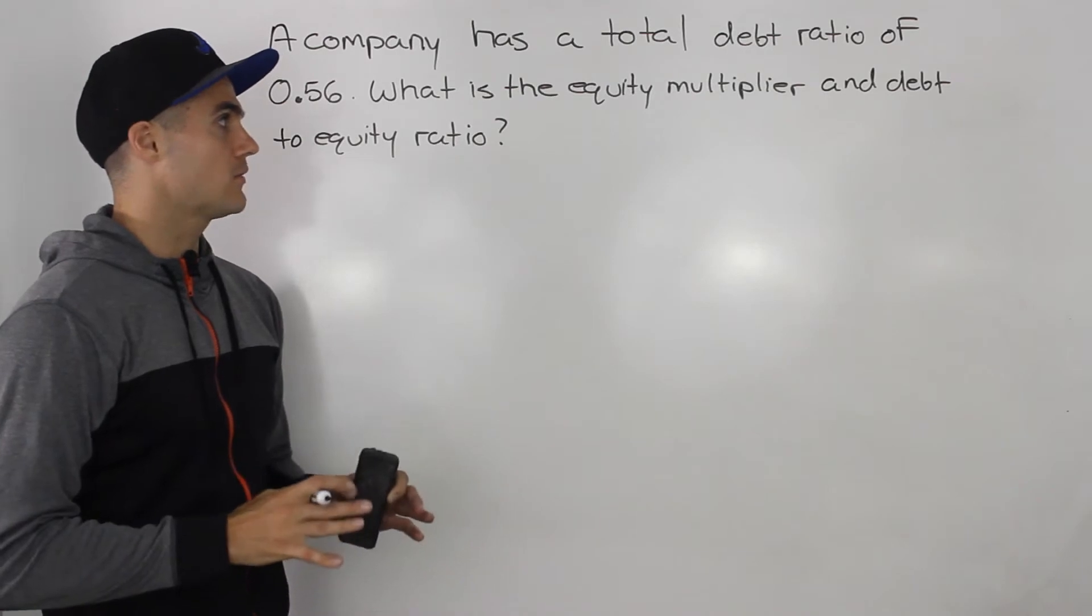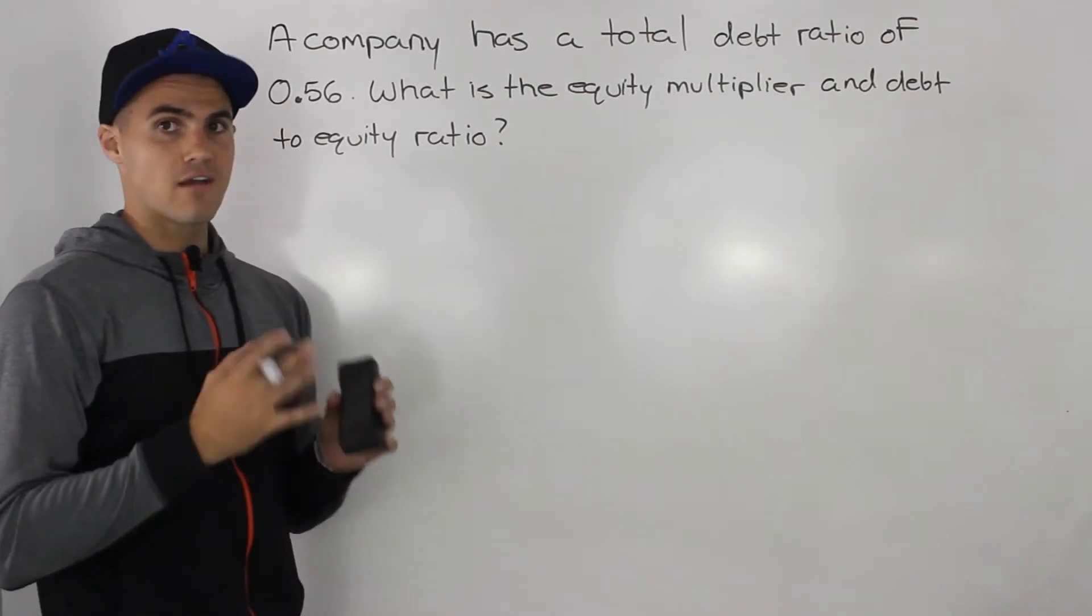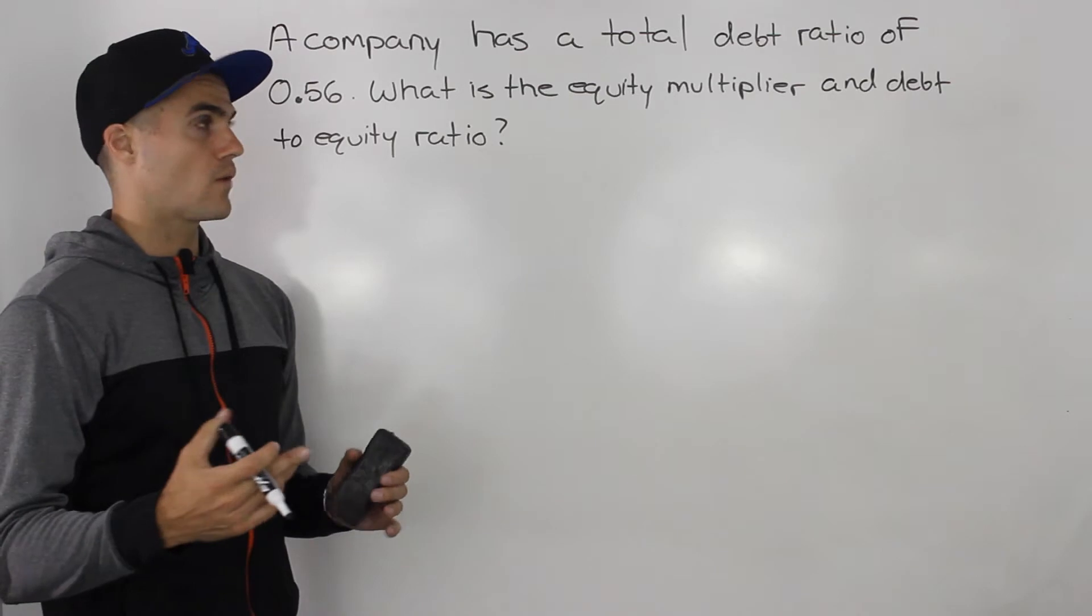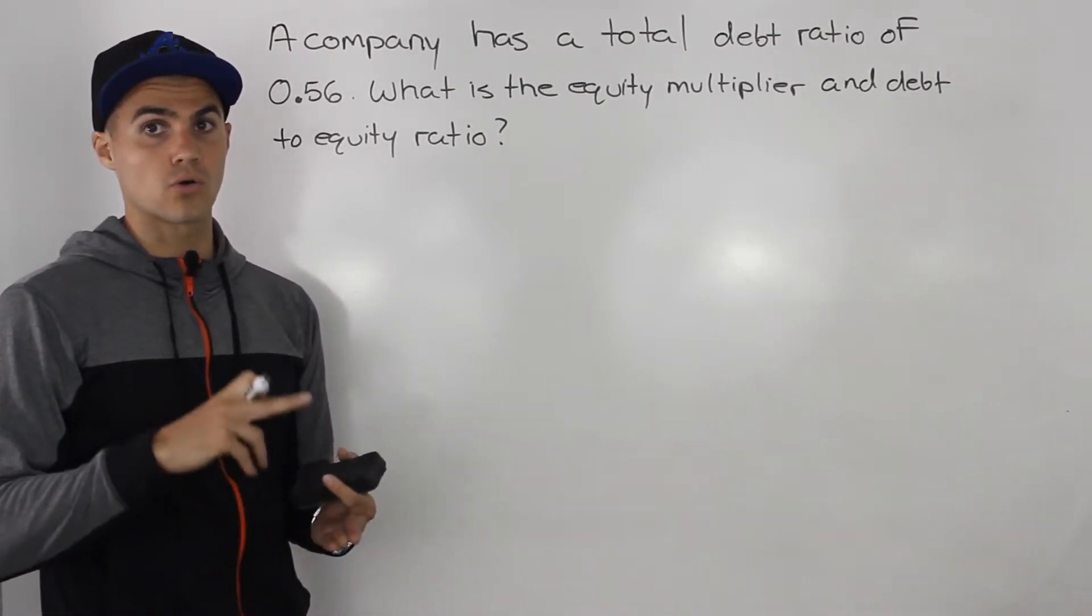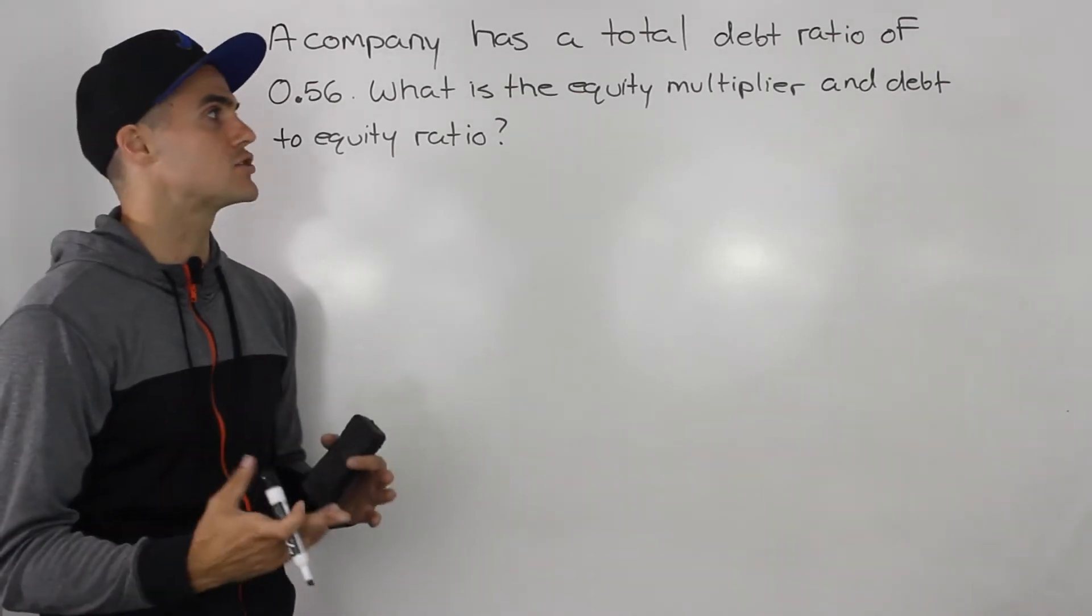Now, if you remember, if you're ever given one of three things in a question, whether it is the debt to equity ratio, the equity multiplier, or the total debt ratio, you always want to make a mini balance sheet.